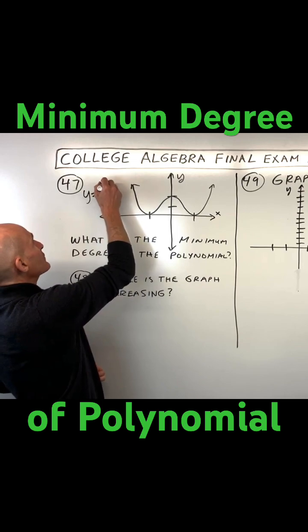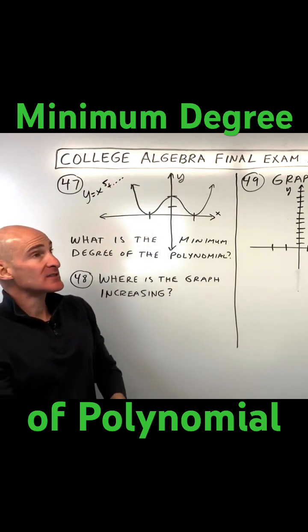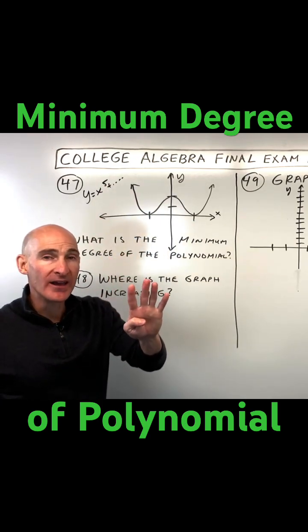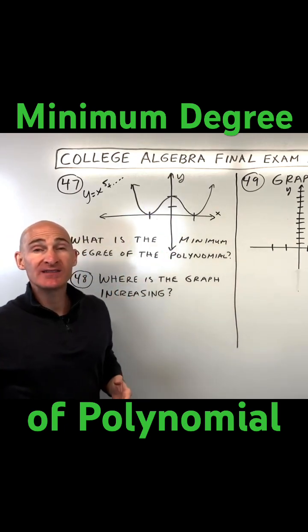y equals x to the fifth plus... whatever the highest degree is. For example, if this was a fifth degree polynomial, if you subtract one, that tells you the maximum number of turns or bends in the graph.